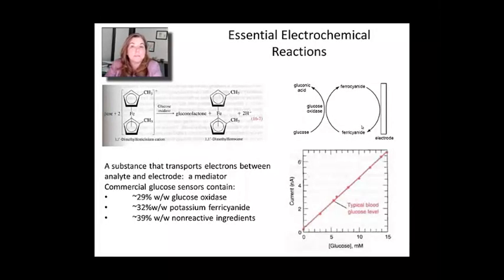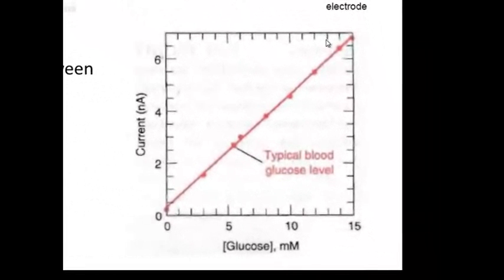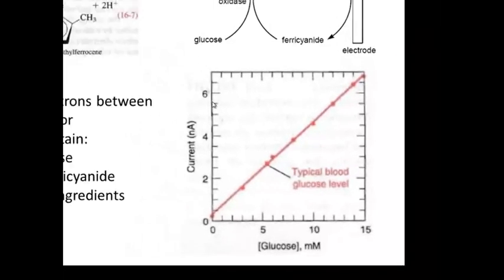This glucose to gluconic acid reaction is coupled to the ferricyanide couple, called a mediator. A mediator is a substance that allows you to measure what's going on in one reaction and translate that into an electrical signal. Shown here is an amperometric measurement where glucose concentration relates to current generated in this couple.